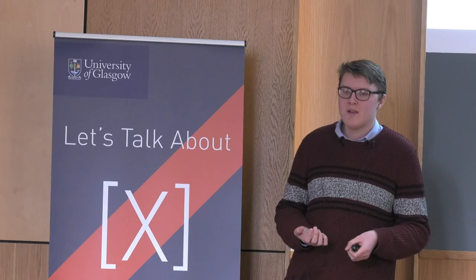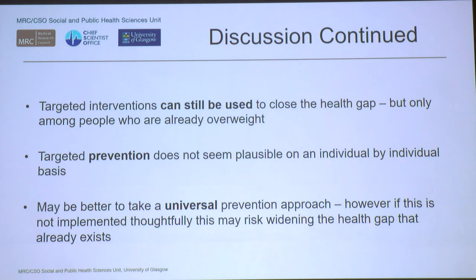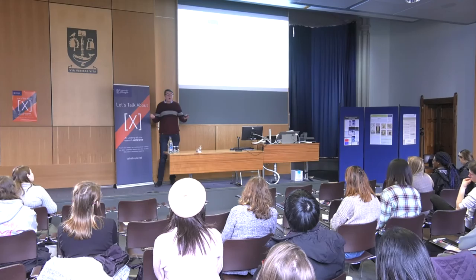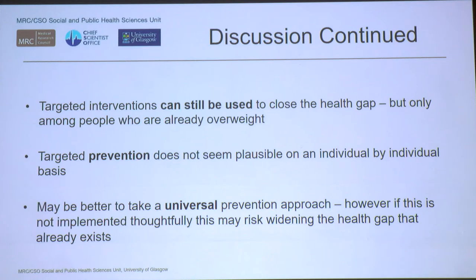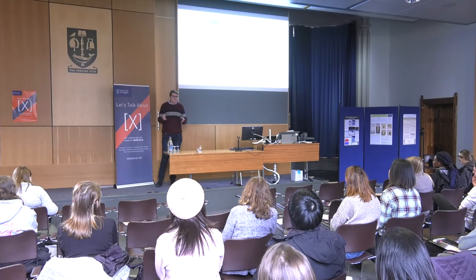What does this mean for interventions? Targeted interventions can be used — especially since we've shown that being overweight at 27 to 30 months impacts whether you're overweight at five — so you can target those already overweight. But for a prevention model, our analysis suggests a more universal approach: targeting everyone at once, even though inequalities exist, because we can't accurately identify who to target beforehand. This implies we need more systemic changes in society rather than targeting specific subsets.